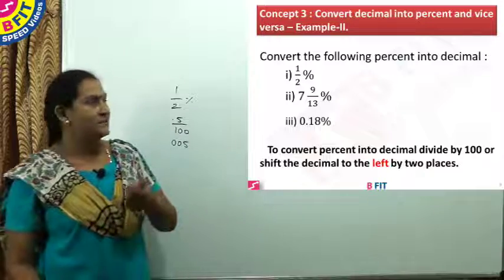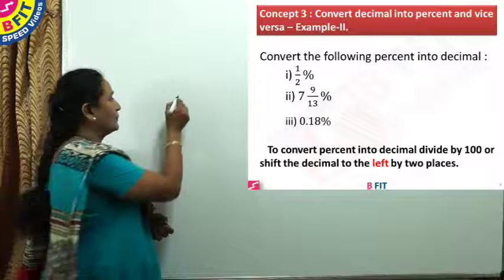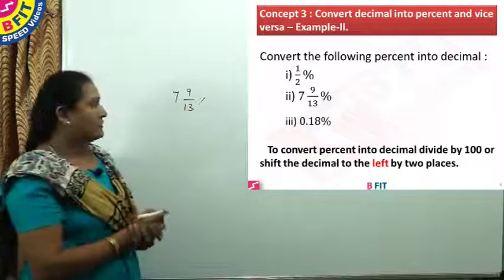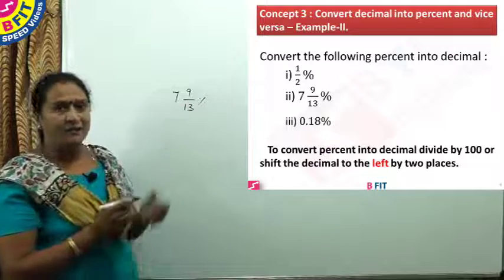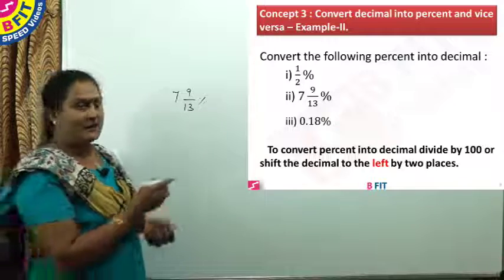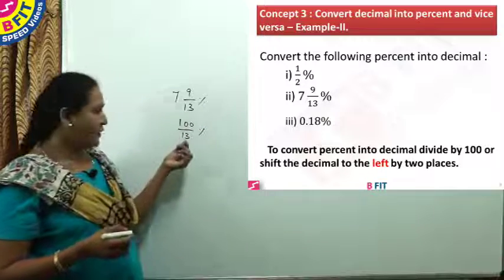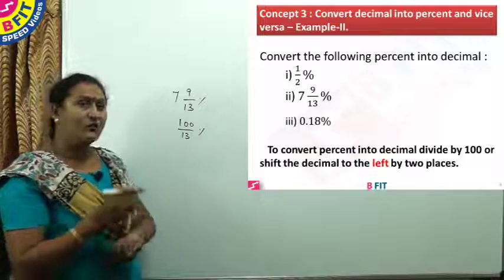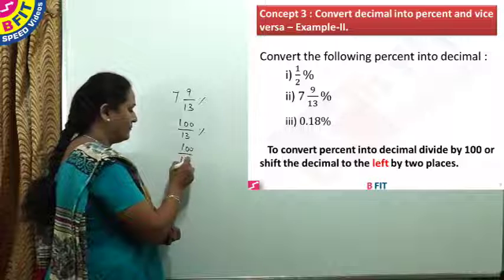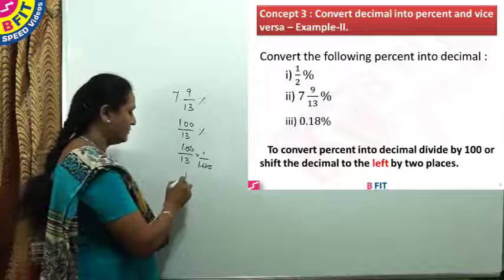The next number: 7 and 9/13 percent. First, we write this in improper fraction format. Multiplying 7 and 13 gives 91, plus 9 is 100. So the mixed fraction is rewritten as the improper fraction 100/13 percent. Now to find the value, divide it by 100 — multiply by 1/100. So the value is 1/13.